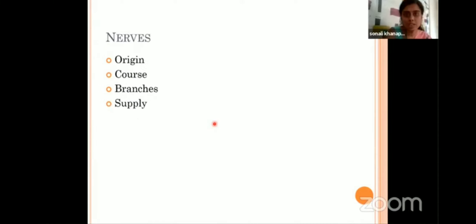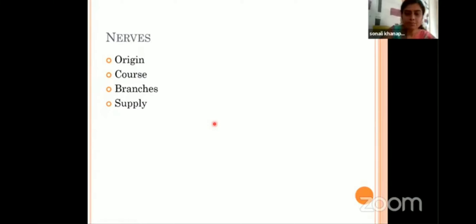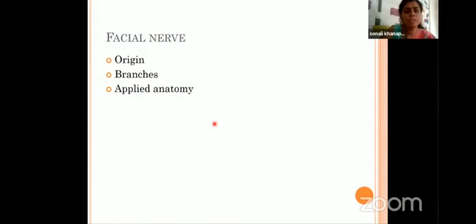Coming to the nerves. If a question on nerves comes, we will describe the nerve in terms of: from where it is originating, what is the course of the nerve before it terminates, what are the branches given, and finally what is the supply. For example, we will be learning about the facial nerve — its origin, branches and finally the applied importance.